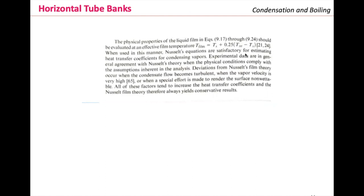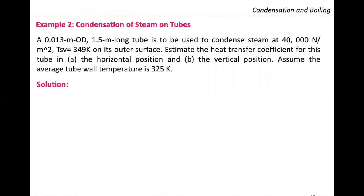We are going to use this equation in an example. We have a 0.013-meter outer diameter, 1.5-meter-long tube to be used to condense steam at 40 kN/m². The saturation temperature of the vapor is 349 K on its outer surface. Estimate the heat transfer coefficient for this tube in the horizontal and vertical positions, assuming the average tube wall temperature is 325 K.